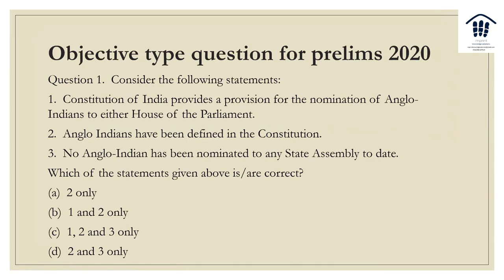Now let's head to the question which can come in prelims. Consider the following statements: Number one — the Constitution of India provides a provision for nomination of Anglo-Indians to either House of Parliament. Number two — Anglo-Indians have been defined in the Constitution. Number three — no Anglo-Indian has been nominated to any State Assembly to date. Which of the following statements is correct? Pause the video and try it yourself. The answer is 2 only. Statement 1 is wrong because it's not either house — it's only the House of the People. Statement 3 is wrong because Anglo-Indians have indeed been nominated to state assemblies, as seen in the example of Goa between the BJP and Congress.